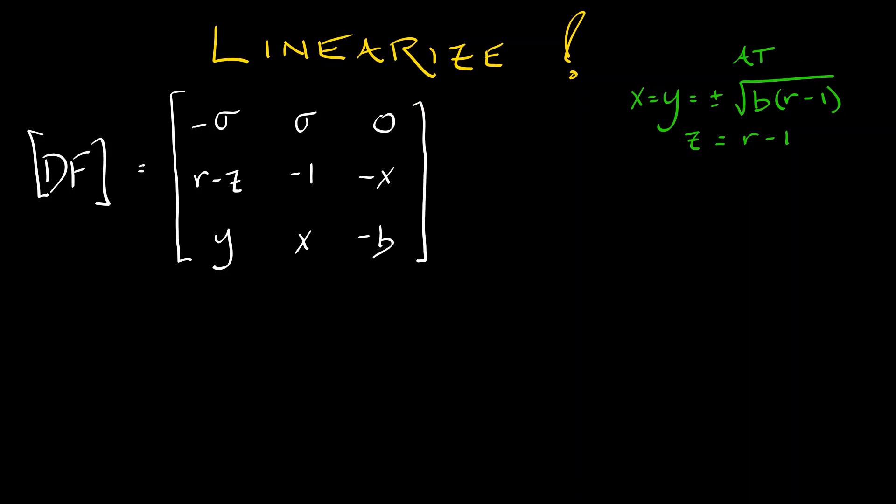Let's linearize. Let's take the derivative of the right-hand side, which we have previously played around with. This is not so hard to work with. And if we evaluate this at the point where x and y are equal to plus or minus square root of b times quantity r minus 1 and z equals r minus 1, then what do we get?